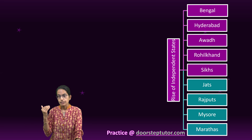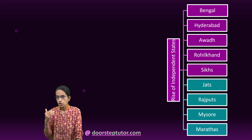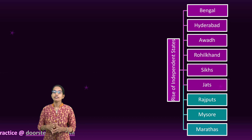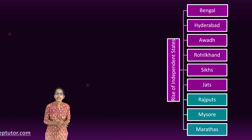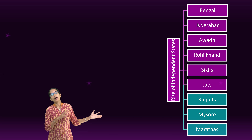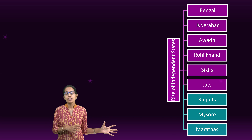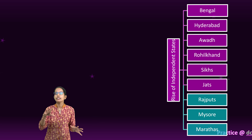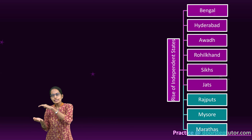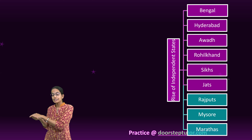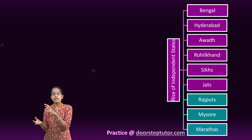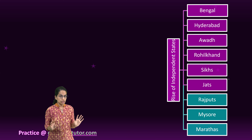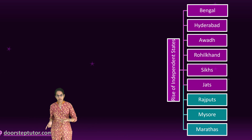Then we had the region of Awad and Rohilkhand. Rohilkhand is an important region — Rohilas were basically tribes from Afghanistan. These tribes established themselves in the region of Uttar Pradesh, in the Moradabad and Bareilly area. Once they established there, they were constantly taking advantage of the confusion created by Nadir Shah's invasion of India.